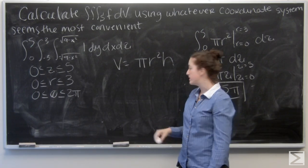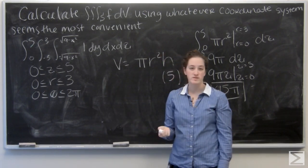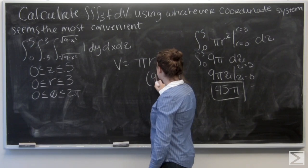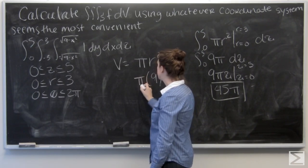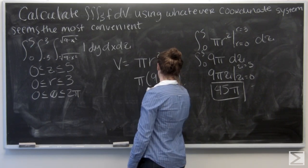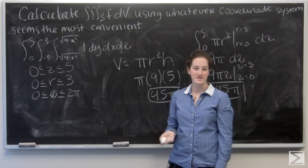We know radius went from zero to three, so plug in three for radius, nine times five, 45 pi. So our integral worked, and we got the right answer.